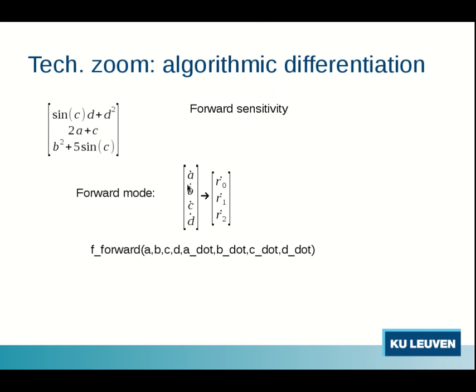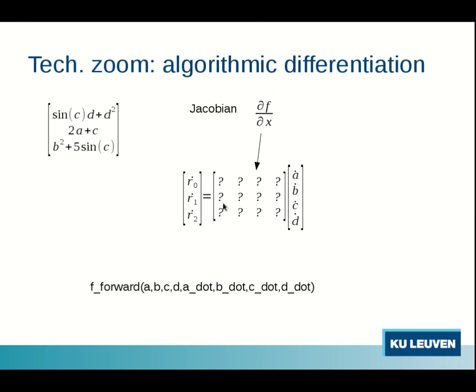If we look at the forward seeds and sensitivities the relation by definition is the Jacobian of the function. And the goal is to construct the values for all these question marks here. So suppose we want to evaluate the Jacobian for some random numbers. I give here some a, b, c, and d such that you can do the calculus on paper if you want.